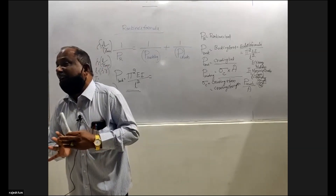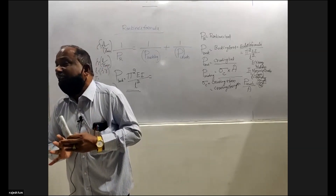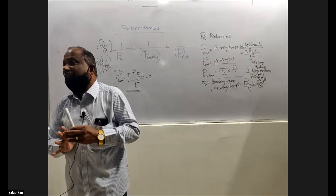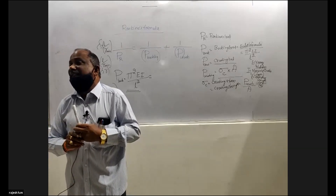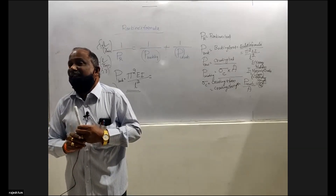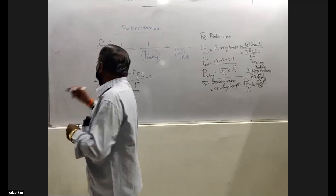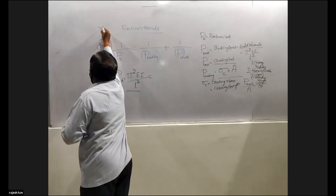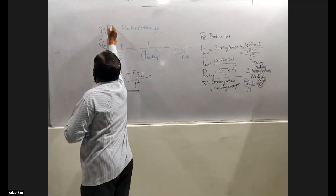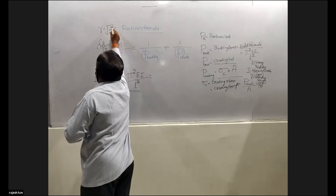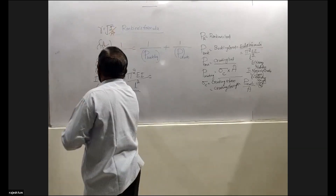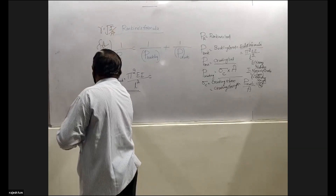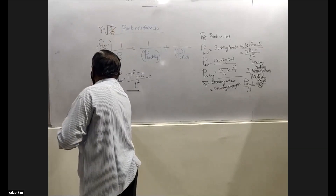If I know the area and I know the radius of gyration, it is possible to calculate the moment of inertia. R equals the square root of I by A, which means I equals A times R squared. That is the fundamental relationship.